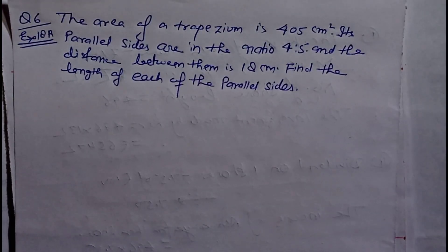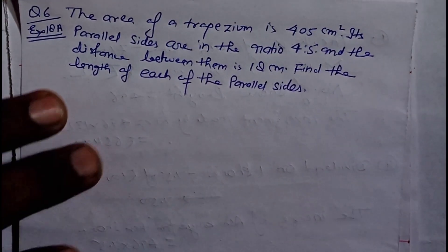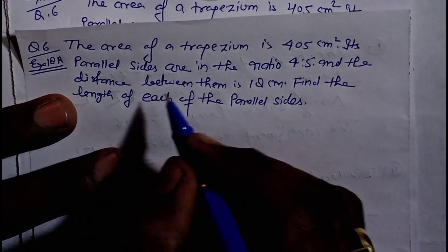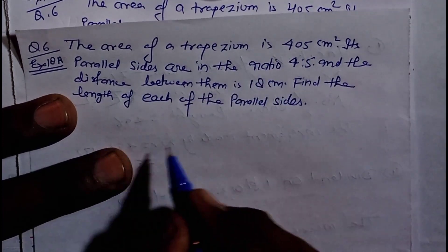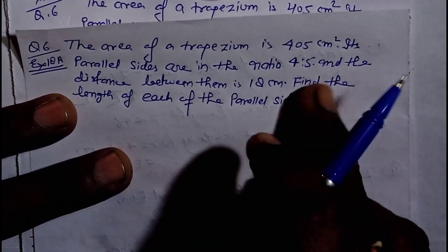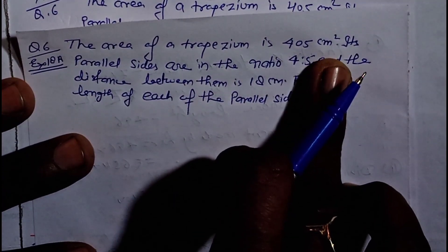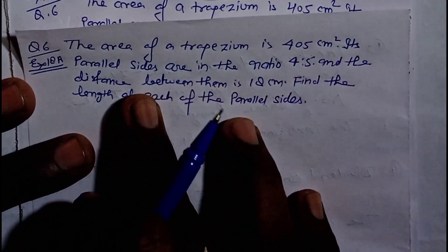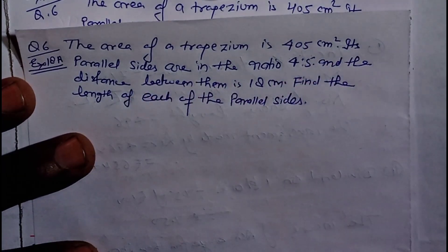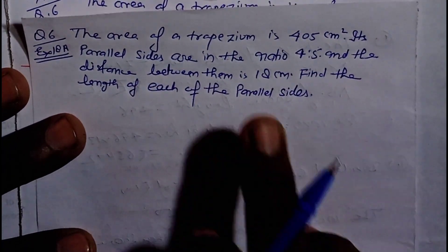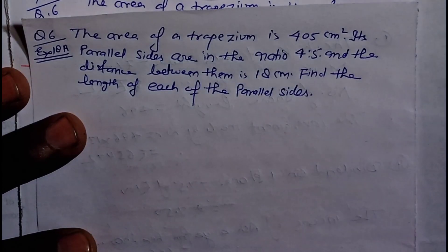Exercise 18a ka question number 6 hai. The area of a trapezium is 405 cm square. Its parallel sides are in the ratio 4 ratio 5.